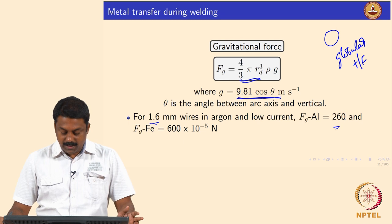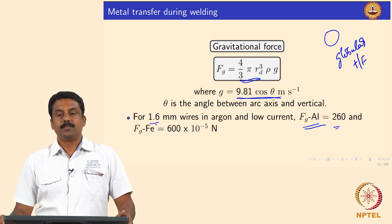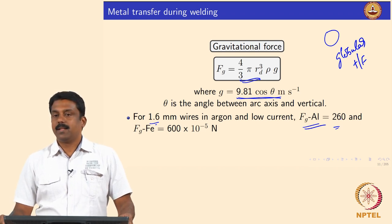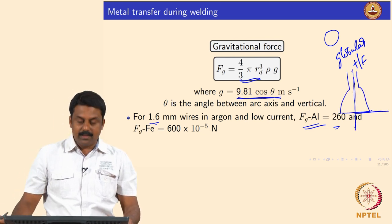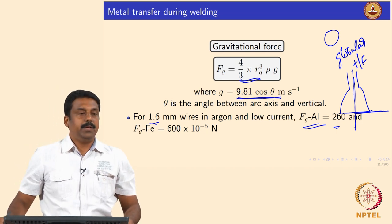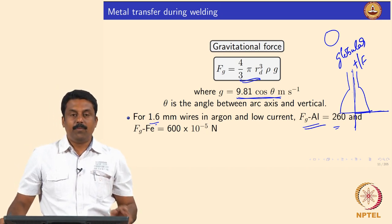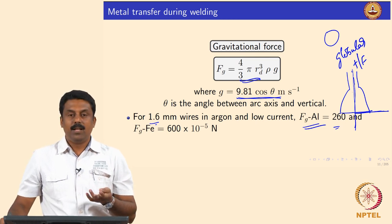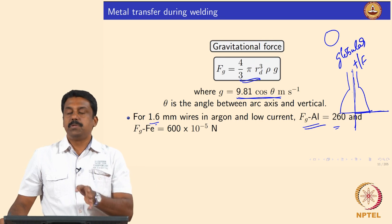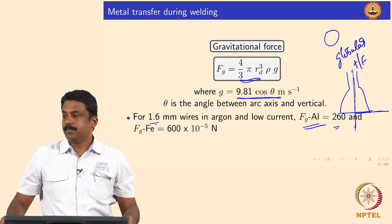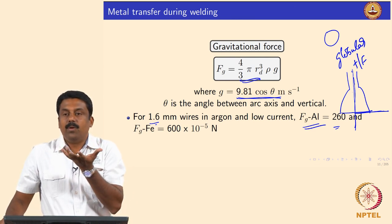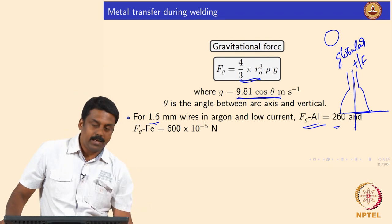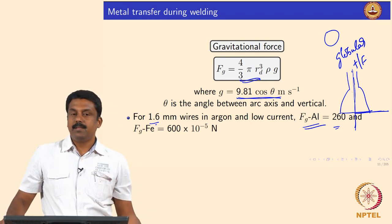So the term here is cos theta, and this is a very significant force when you are operating at low current. For a 1.6 mm diameter, Argon, low current, the gravitational force is approximately 260 to 600 × 10⁻⁵ Newton. For 1.6 mm it comes around 600 × 10⁻⁵ Newton.